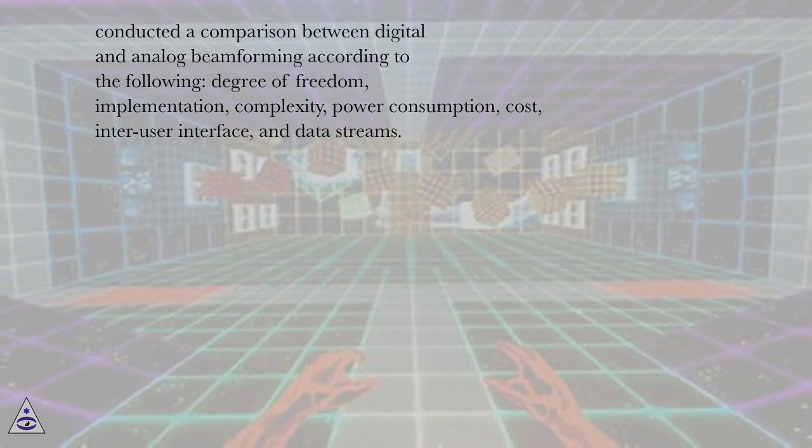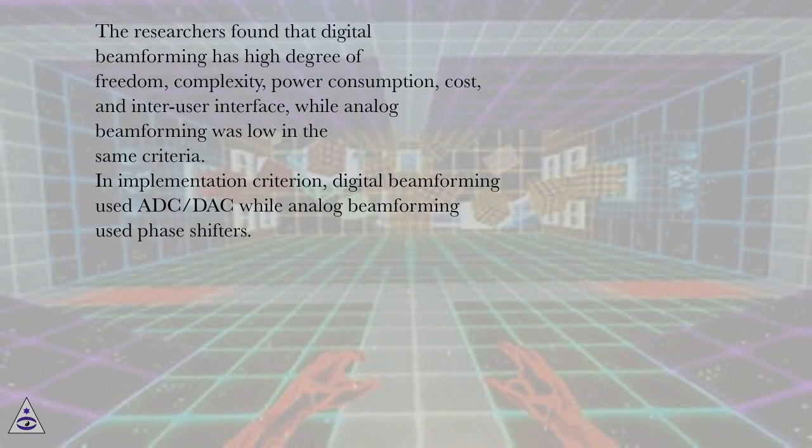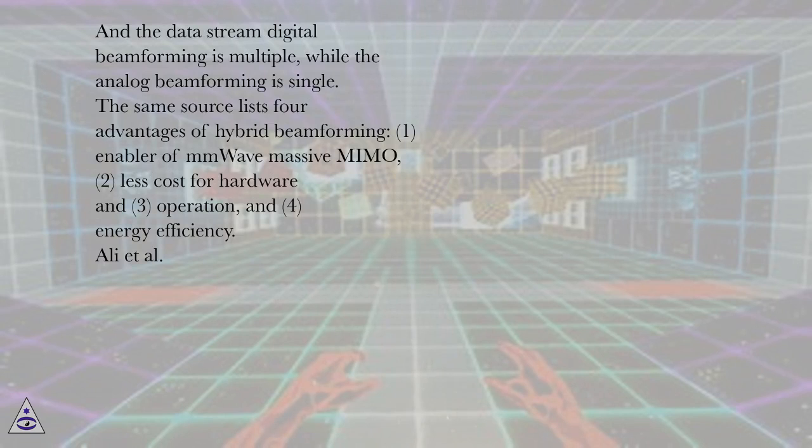The researchers of Ahmed et al. conducted a comparison between digital and analog beamforming according to the following: degree of freedom, implementation, complexity, power consumption, cost, inter-user interface, and data streams. The researchers found that digital beamforming has high degree of freedom, complexity, power consumption, cost, and inter-user interface, while analog beamforming was low in the same criteria. In implementation criterion, digital beamforming used ADC-DAC while analog beamforming used phase shifters. And the data stream digital beamforming is multiple, while the analog beamforming is single.